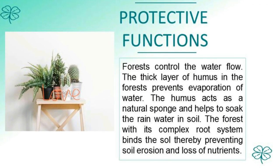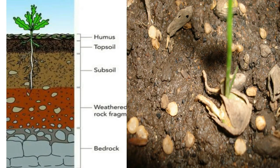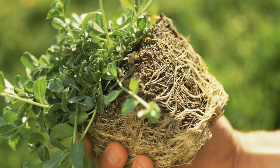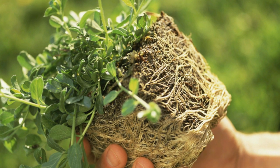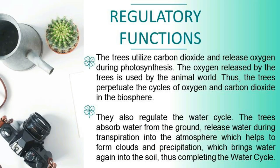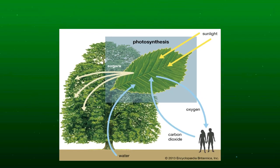Wood obtained from trees is used as a source of energy in major parts of India. The protective function: forests also protect the environment in various ways. Trees control water flow; the humus acts as a natural sponge and helps to soak rainwater into the soil. The root system of trees binds the soil and prevents soil erosion and loss of nutrients.